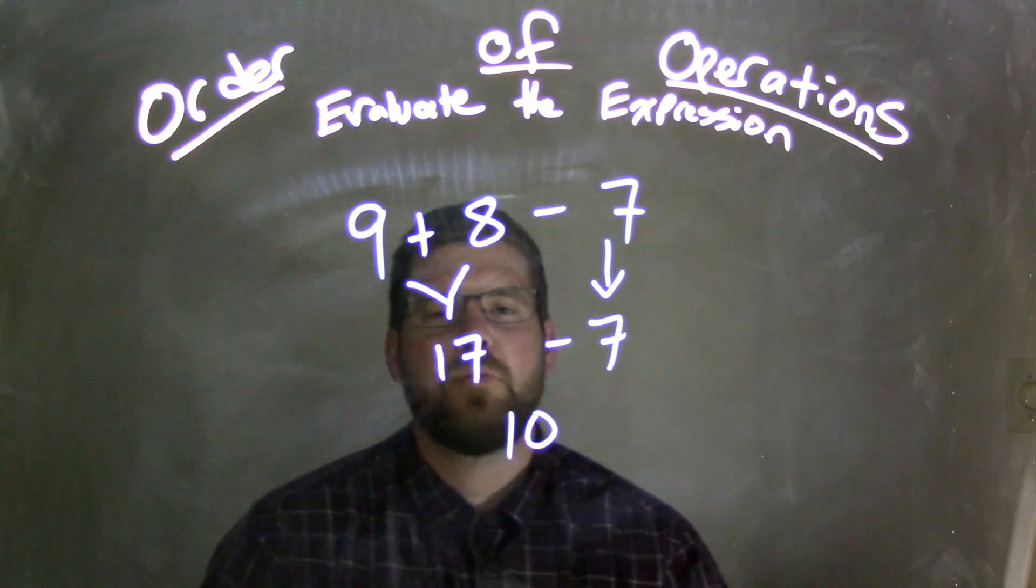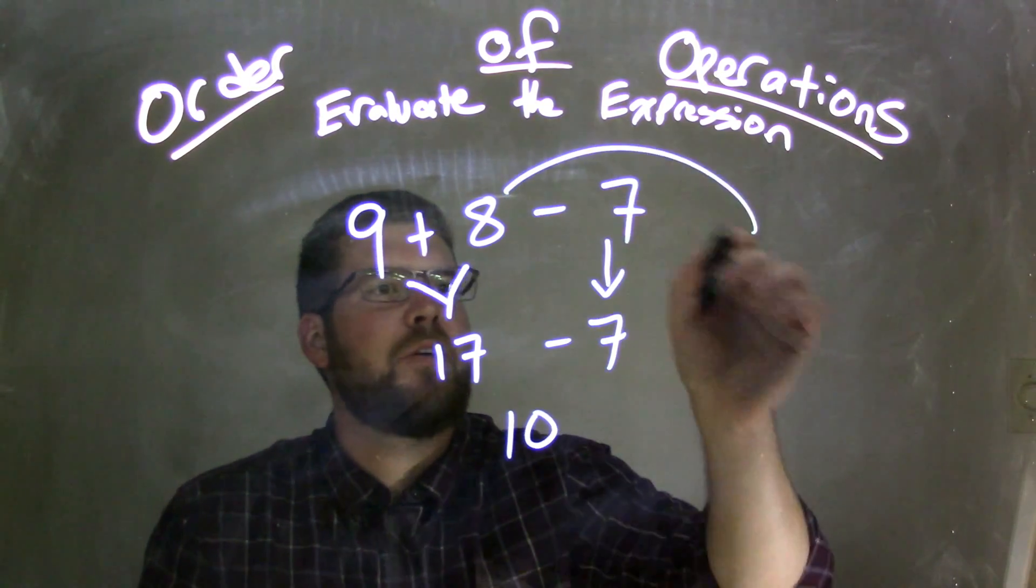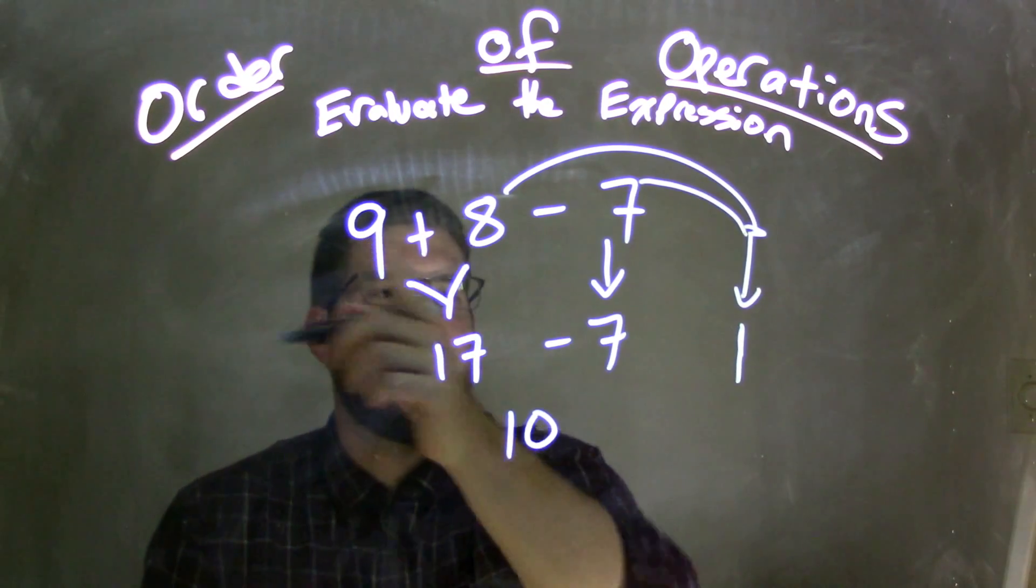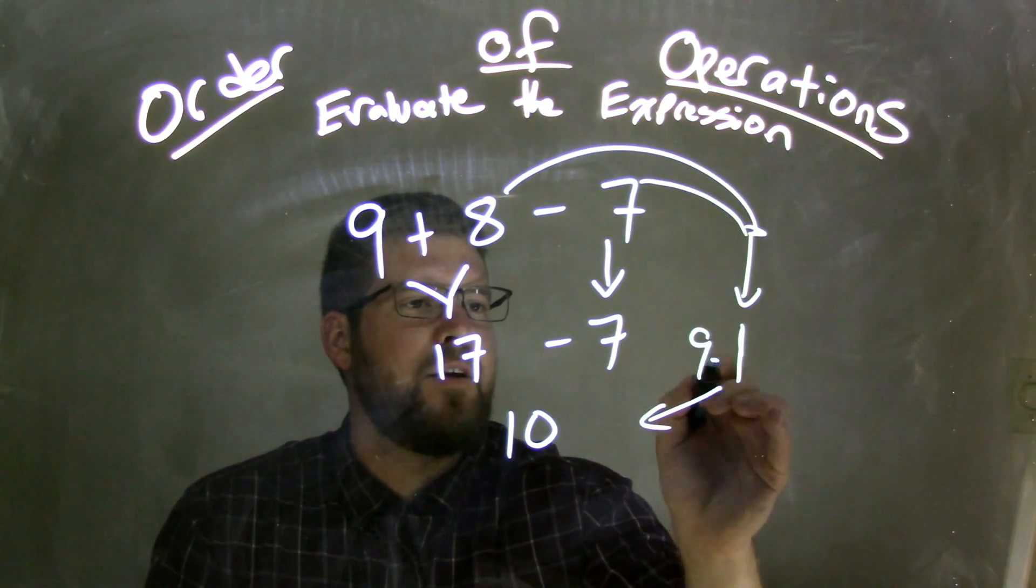Now, what would have happened if I subtracted first, if I took 8 minus 7? Well, 8 minus 7 comes out to be 1. So the 9 minus 1 does give us that 10.